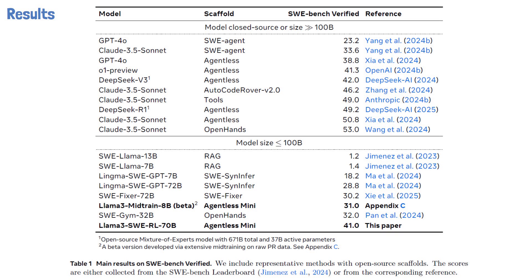Let's now review the main results shown in a table from the paper. This table presents the PASS@1 results on SWE Bench Verified, a human-verified collection of high-quality GitHub issues, specifically designed to evaluate how well models can fix real-world software issues. The table is divided into two sections: the upper section lists closed-source models or models with more than 100 billion parameters, and the lower section focuses on open-source models with fewer than 100 billion parameters. Llama 3 SWERL 70B achieves a PASS@1 score of 41%, meaning it solves 41% of the issues correctly on the first try. This sets a new state-of-the-art for models under 100 billion parameters, though it is open-source and of a much more friendly size.